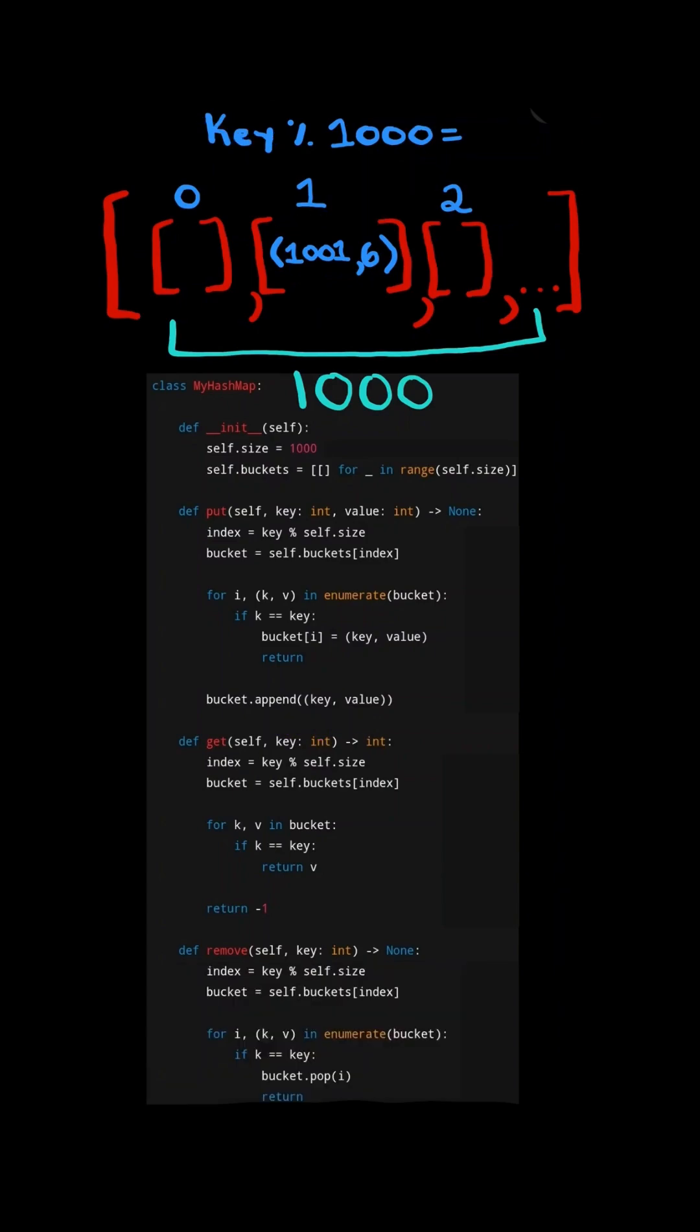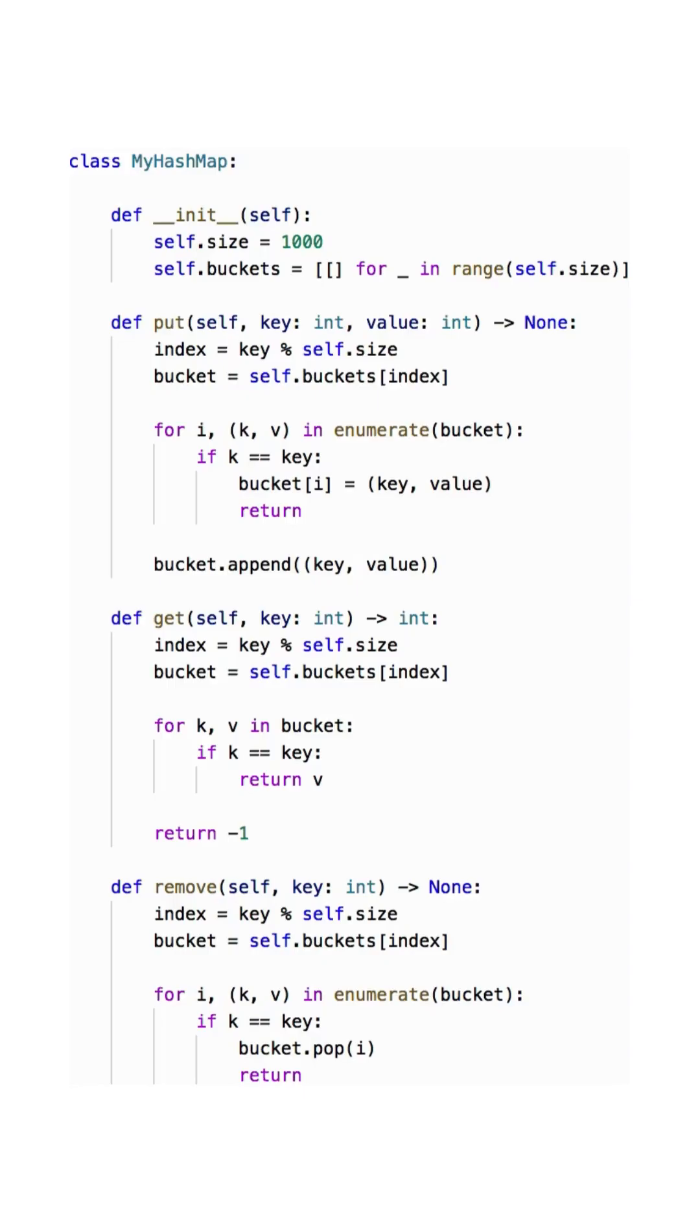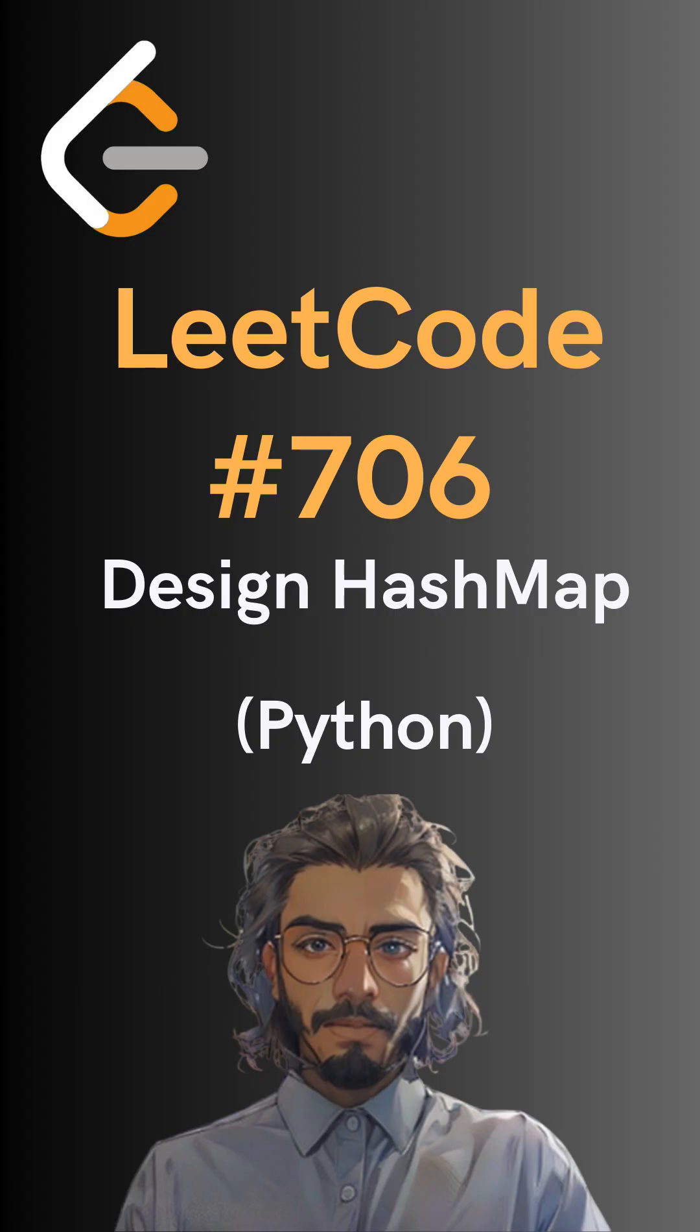And finally, let's move on to the remove method. Let's assume we want to remove the key 1001. We know it gets mapped to bucket 1. We then iterate through the bucket, and if that key exists in the bucket, we pop and remove that index from the bucket. And here's the code to do so. Please like and follow for more.